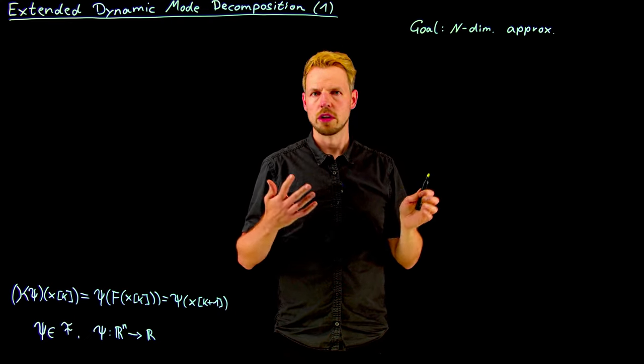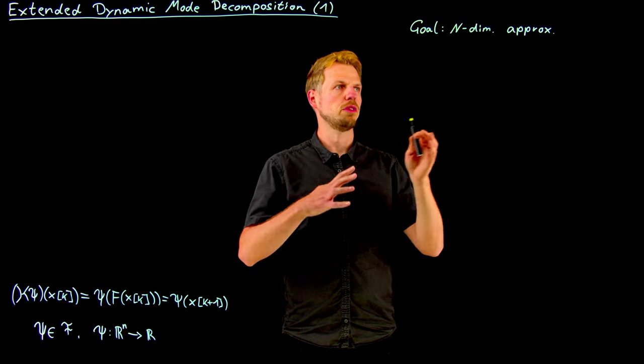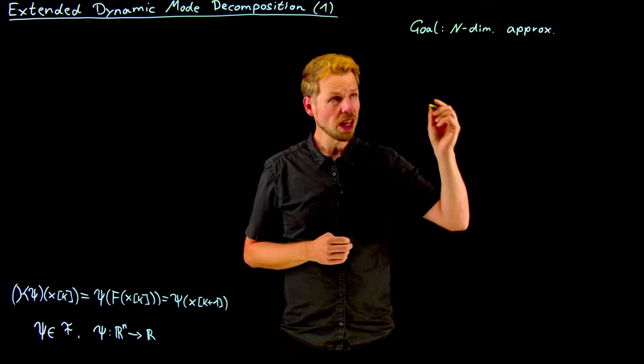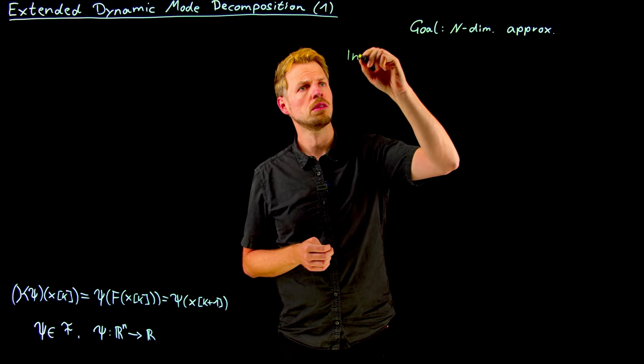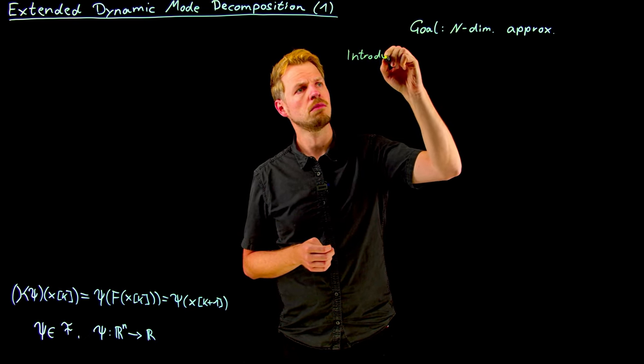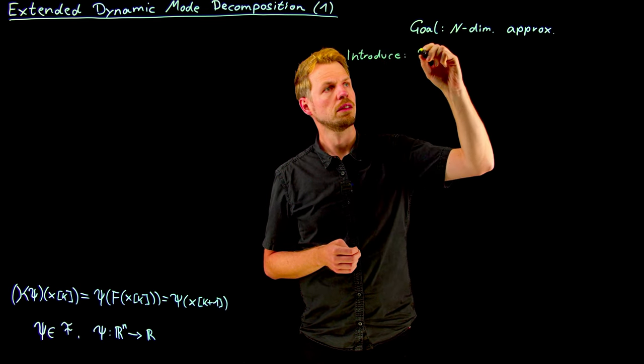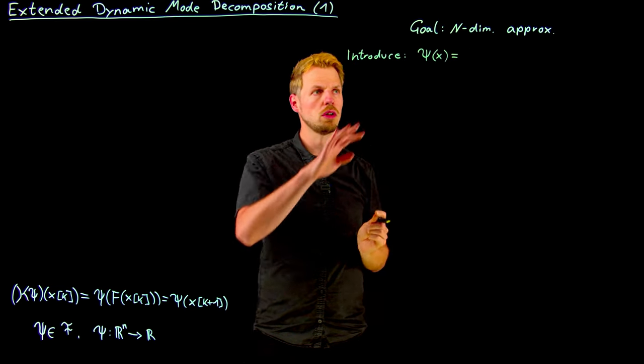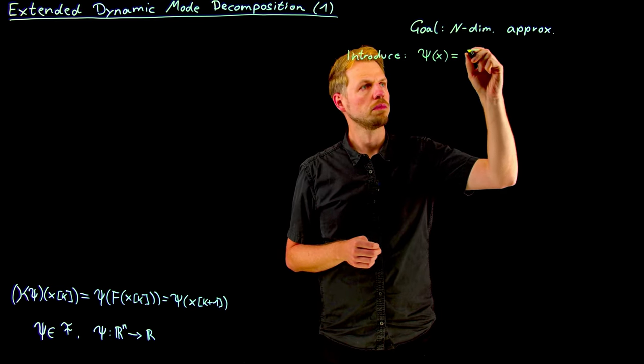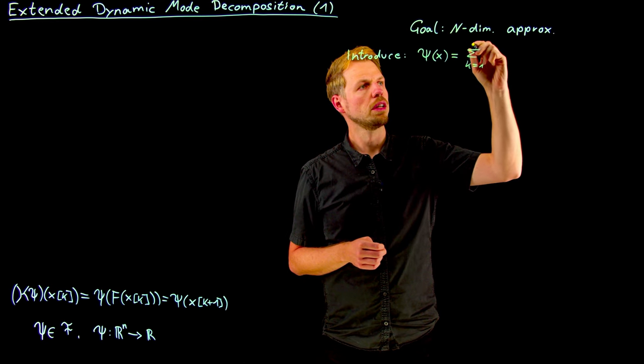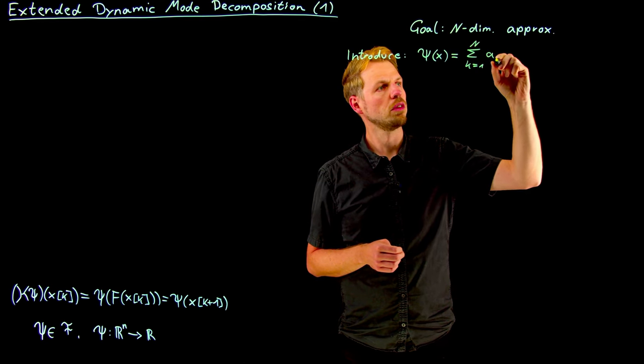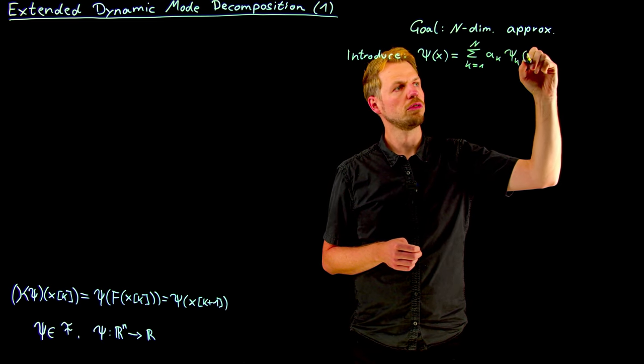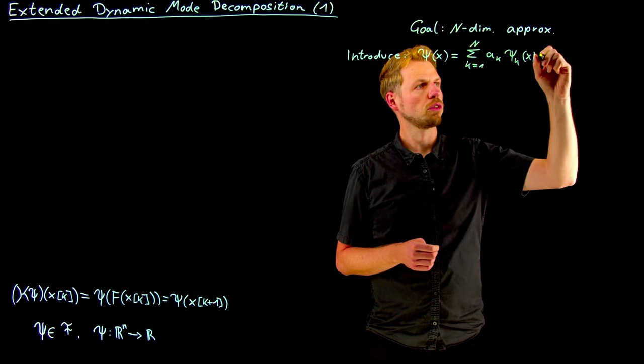This is the what's called Galerkin approximation, and all of the finite element techniques for instance for partial differential equations work with this concept as well. The idea is to introduce a finite dimensional approximation where we are not considering all psi's but only those who can be expressed in the form of this series expansion a_k times psi_k of x, or if we write it in vector form.